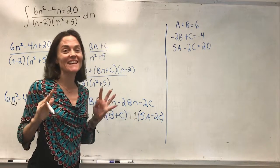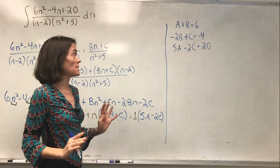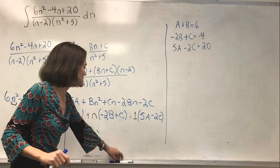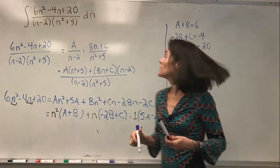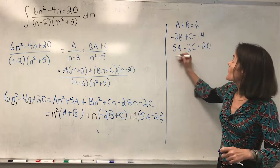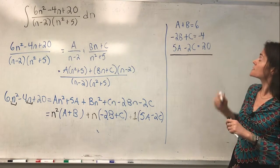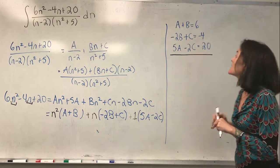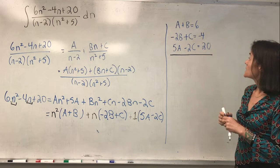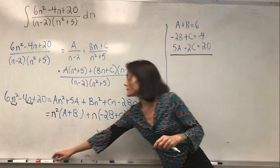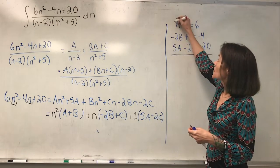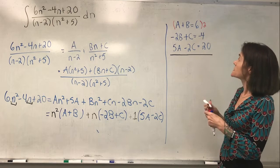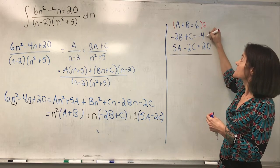We have three equations and three unknowns: A, B, and C. We are able to solve this system. There are a few ways — if you've had linear algebra you could make a matrix, but I'm not going to do that. I'm going to take two times the first equation and add it to the second.